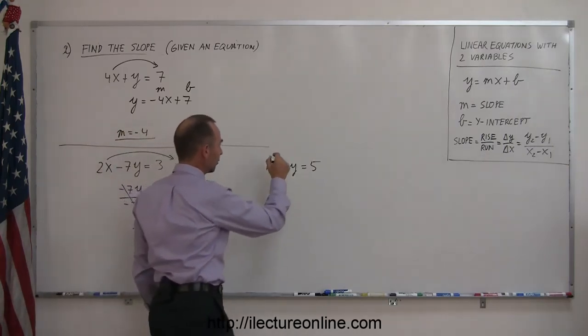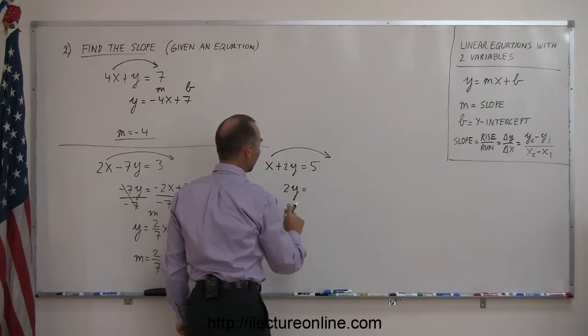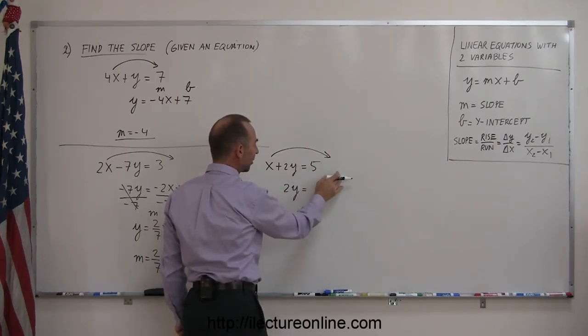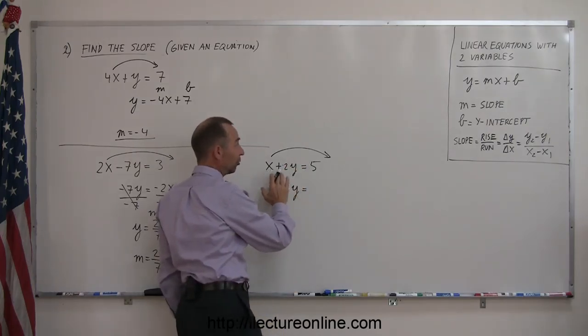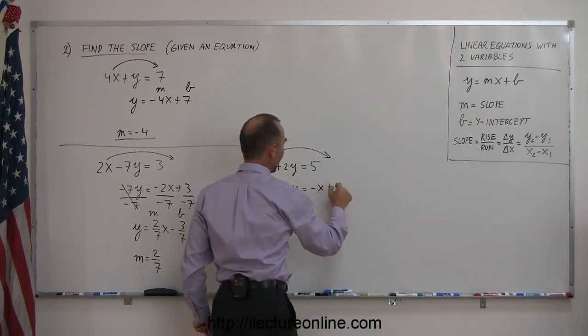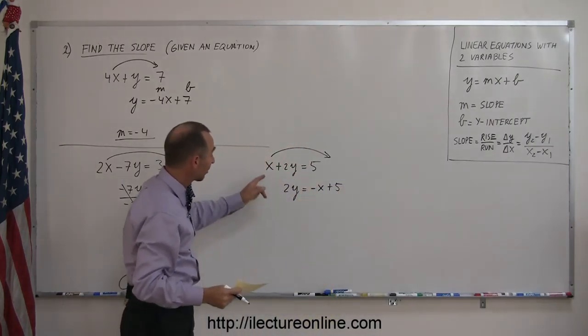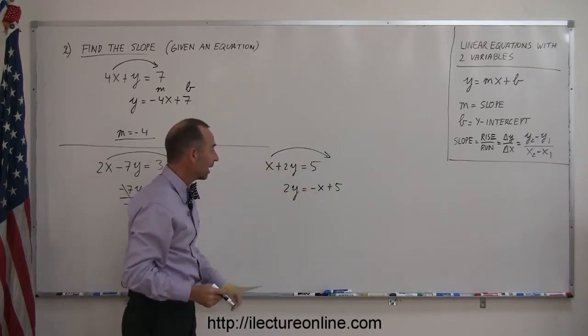and instead of writing it as 5 minus x, because you could, I would like to write the x first, because I want to have this exact format, so I'll write it as minus x plus 5. Remember, when we cross the x over the equal sign, we must change the sign from positive to negative.